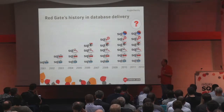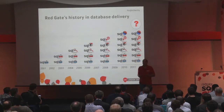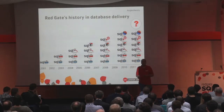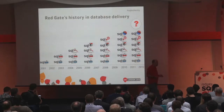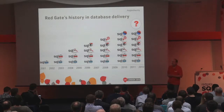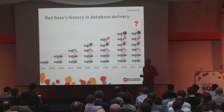We realized that people want to have the data the same in both environments, so we developed a tool called Data Compare, which allowed you to make the data in your dev environment the same as your test or production. Over time we introduced other products — Dependency Tracker, SQL Doc, and Data Generator — all aimed at helping you manage database changes from a dev to a test to a production environment.